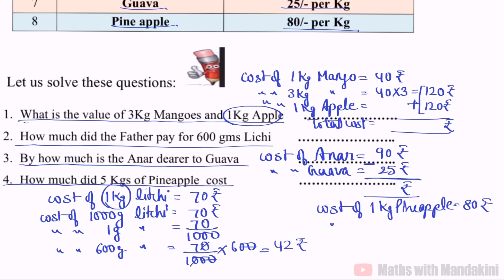Question 4: How much did 5 kg of pineapple cost? Cost of 1 kg pineapple is 80 rupees, so cost of 5 kg pineapple is 80 into 5. You will multiply it and the answer comes in rupees. How easily the worksheet is done! We have to calculate and write the answer.